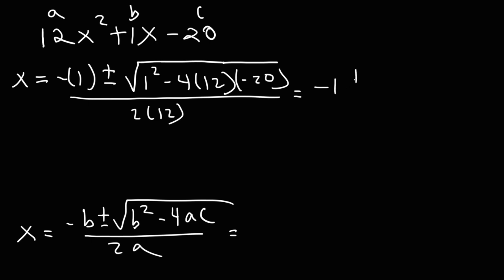So now, let's simplify what we have. 1 squared is 1. And then we have negative 4 times 12 times minus 20, which is 960. And then 2 times 12 is 24. 1 plus 960 is 961. And the square root of 961 is 31.